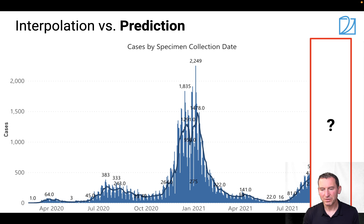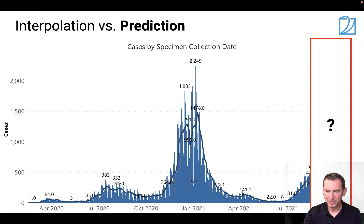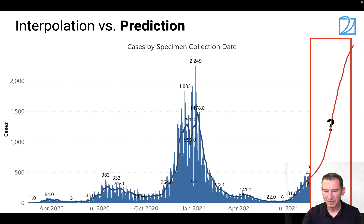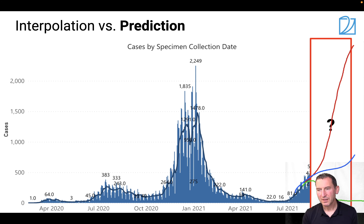Back to our COVID-19 example — the question that everybody wants to ask and answer is: what's going to happen next? If you look at this curve, it could go really badly wrong, or it could just disappear. There's really anything in between. We don't know what happens, at least not a priori, because we don't have the gift of foresight, but we can try to estimate.